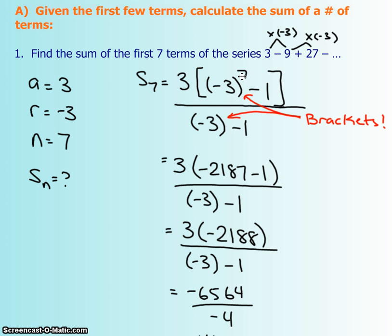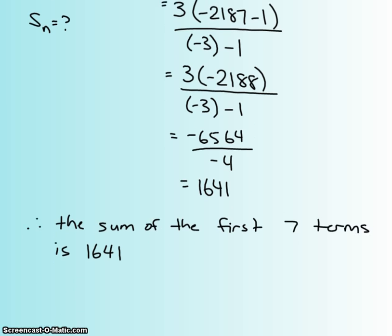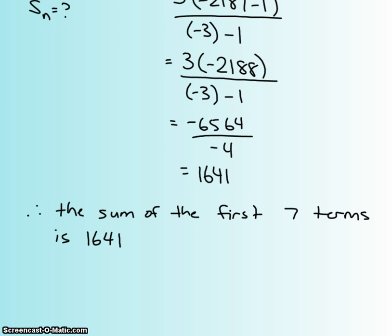Then you're just going to do BEDMAS. Exponents first, so you get that big number. Then before the multiplication, I'm going to do the combination of the brackets. So we get this. Then we multiply and we also subtract on the bottom. So I'm going to scroll down a bit and we get 1,641 as the sum of our first 7 terms. Remember that you could always take your calculator and just manually add them all together and see if you get the same answer, just as a check.